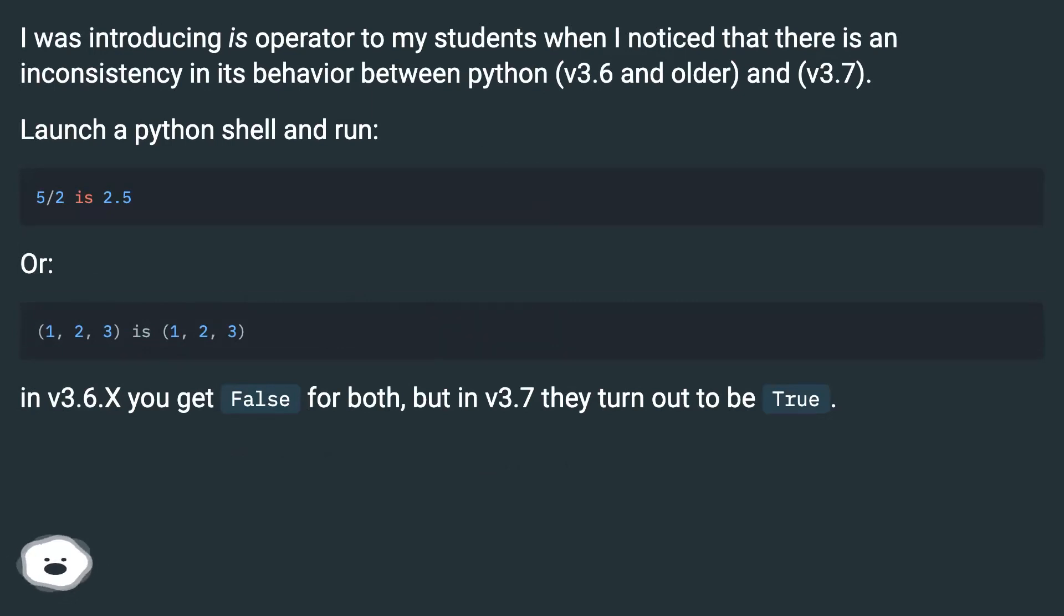Launch a Python shell and run: 5/2 is 2.5, or (1, 2, 3) is (1, 2, 3). In v3.6.X you get False for both, but in v3.7 they turn out to be True.